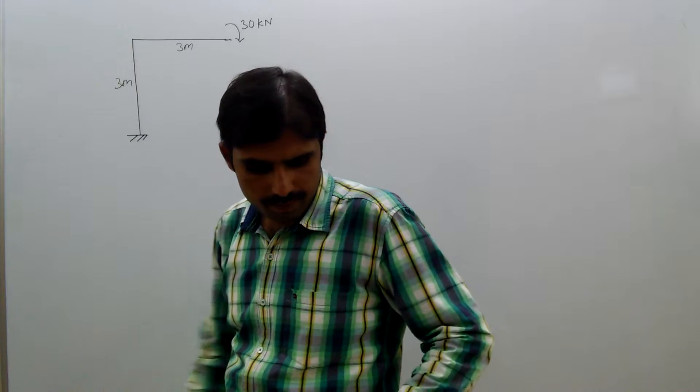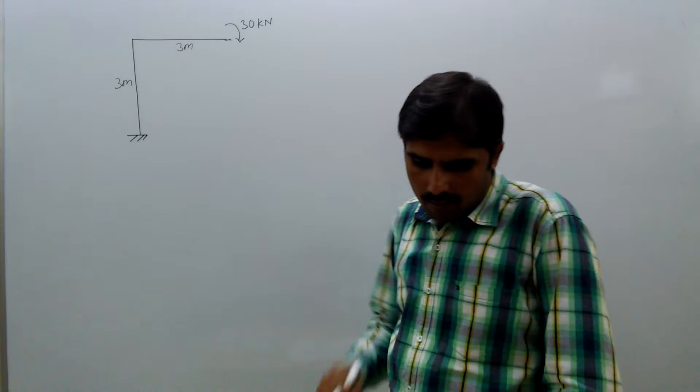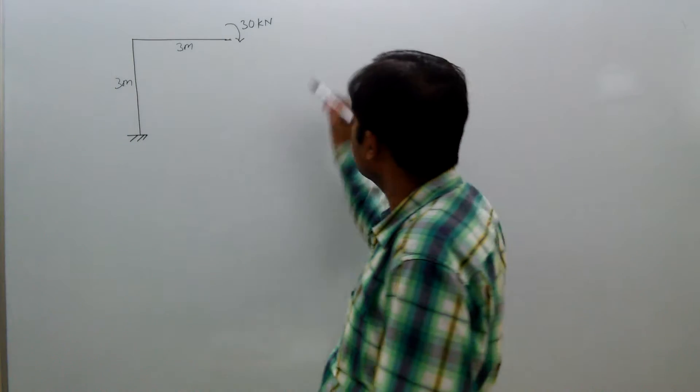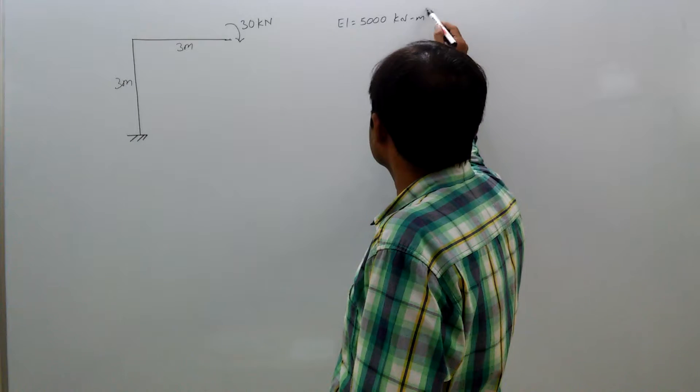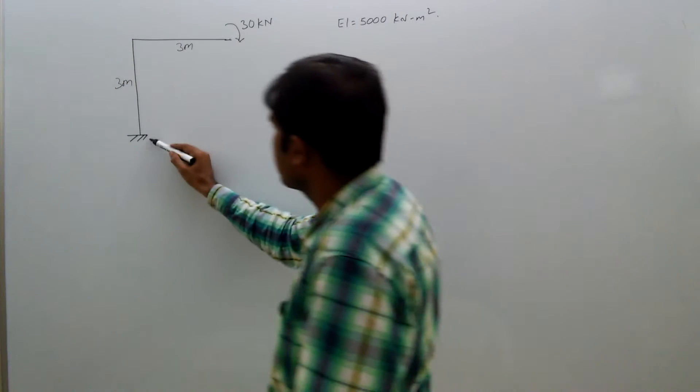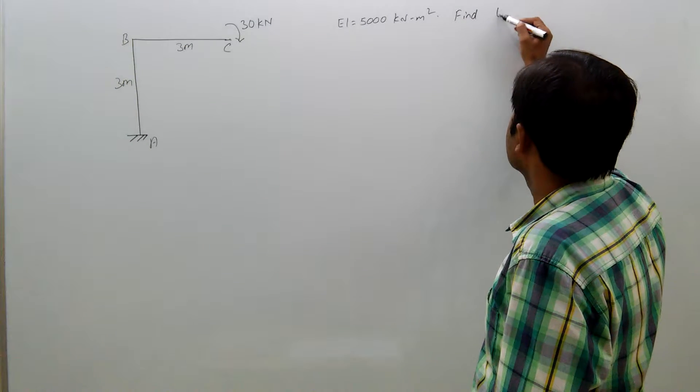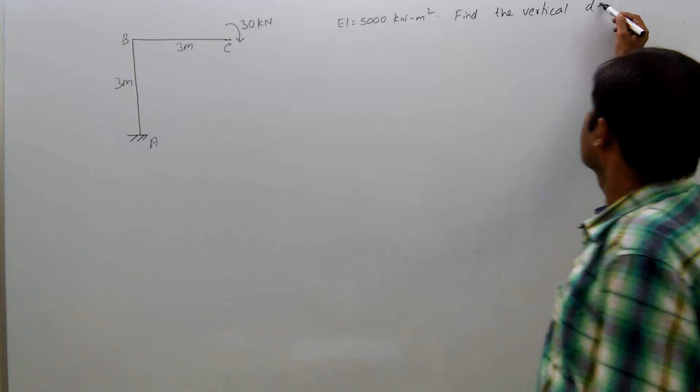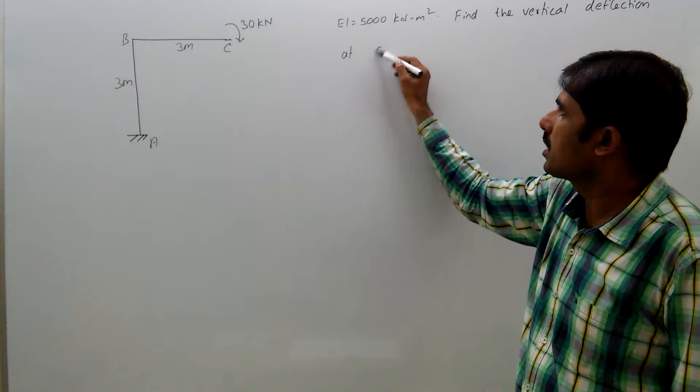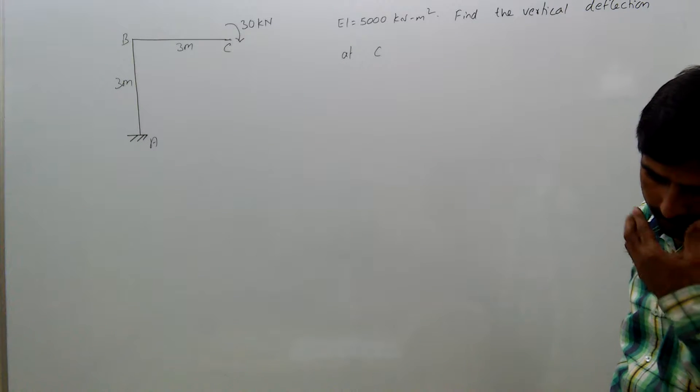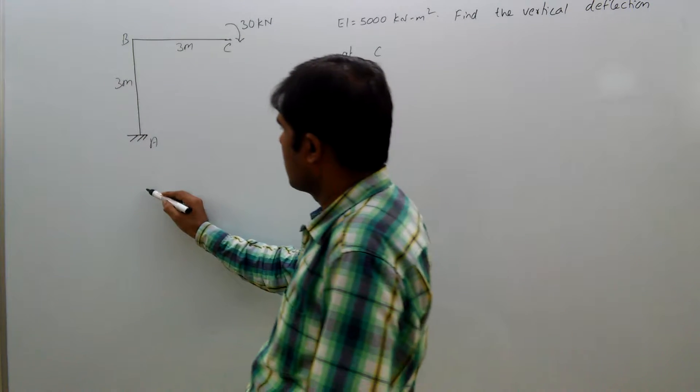This is three meters. Here EA equal to five thousand kilometer square. Find the vertical deflection at C. Find the vertical deflection at C. Now take a similar beam.